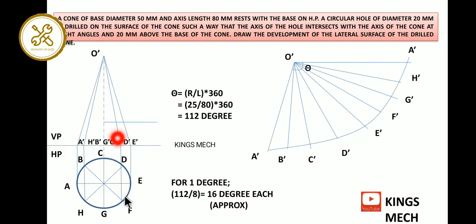The hole is 20mm above the base of the cone. From the base, measure 20mm and drop one line. At the center, draw one circle. The circle diameter is 20mm, so the radius is 10mm. Draw a circle with 10mm radius, which is 1cm radius.